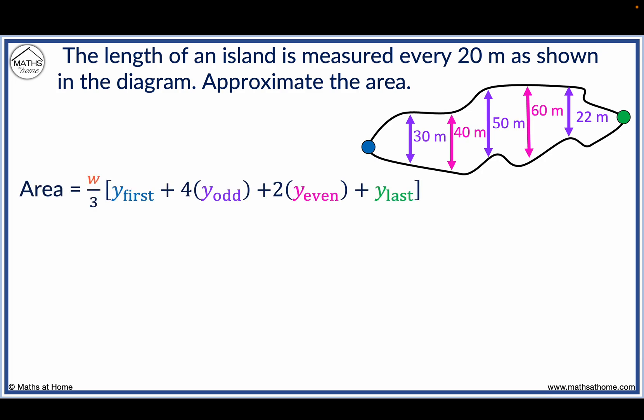We start with the equation. The value of W is 20, since we are told the measurements are made every 20 metres. Now the first measurement is 0. This is shown by the point in the diagram. We enter 0 as our Y first value.